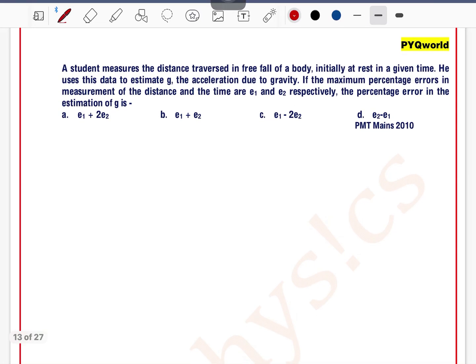A student measures the distance traversed in free fall of a body initially at rest in a given time. It is given that motion is a free fall motion, so it is a free fall and initial velocity is zero.